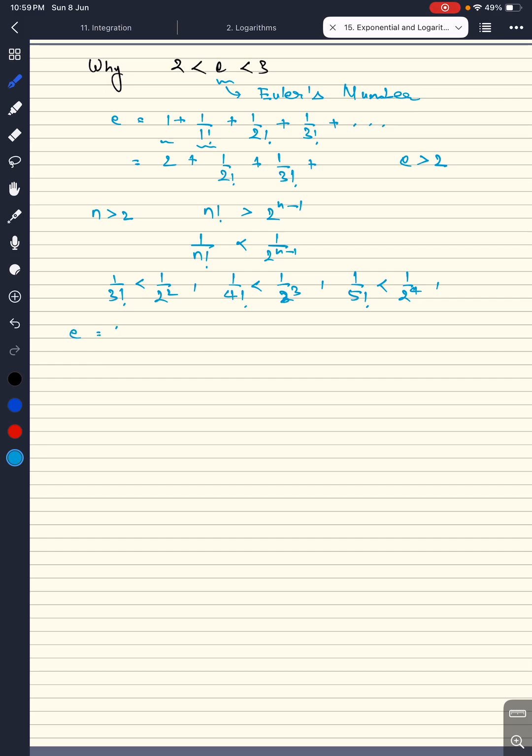So E basically equals 1 plus 1 over 1 factorial plus 1 over 2 factorial plus 1 over 3 factorial plus 1 over 4 factorial and so on.